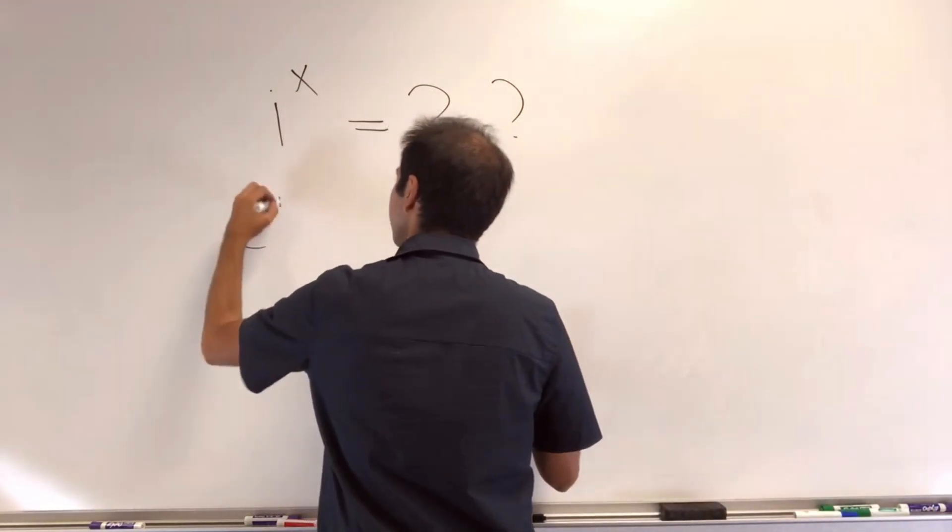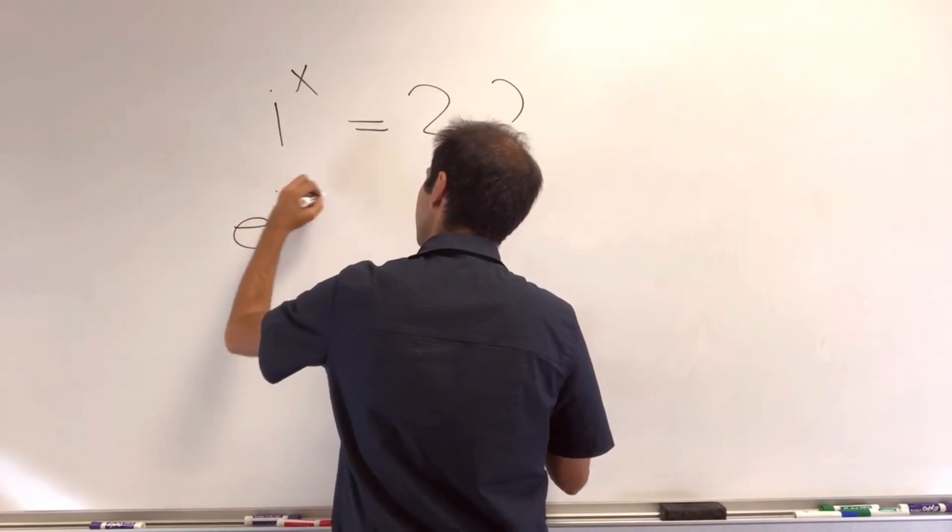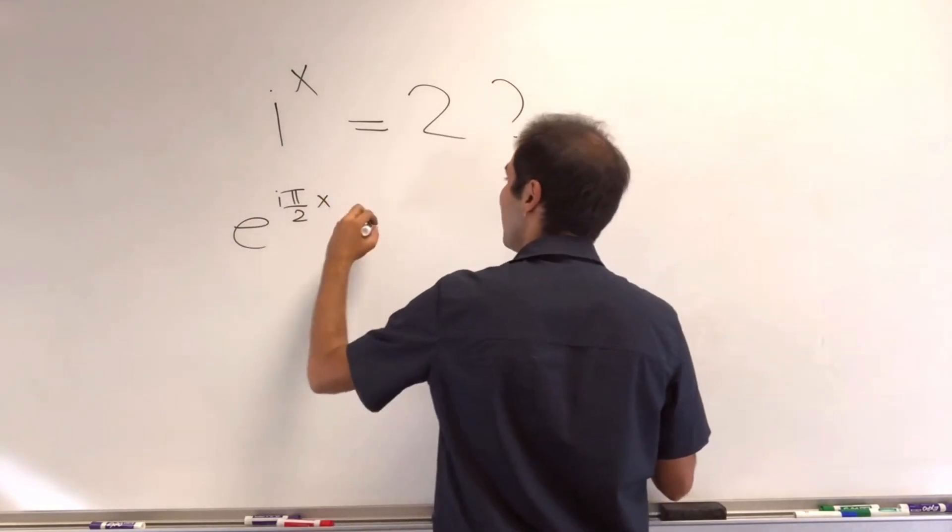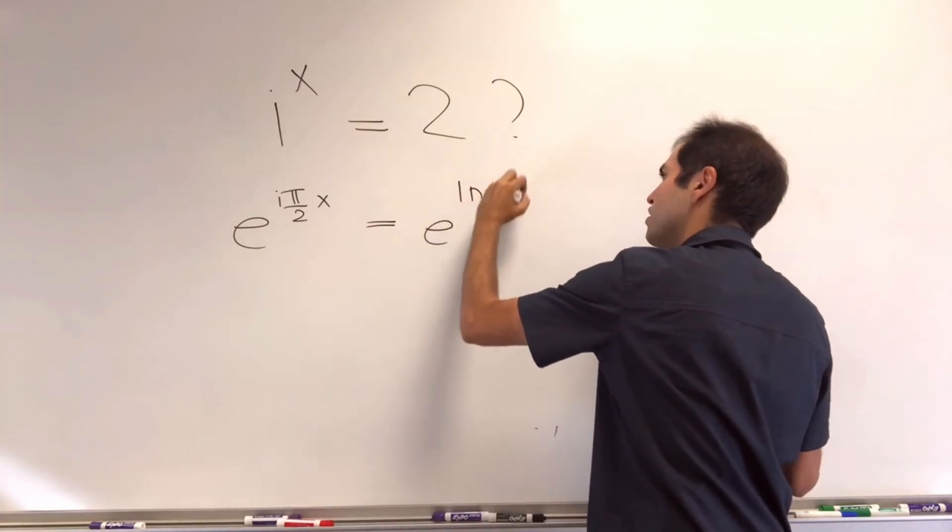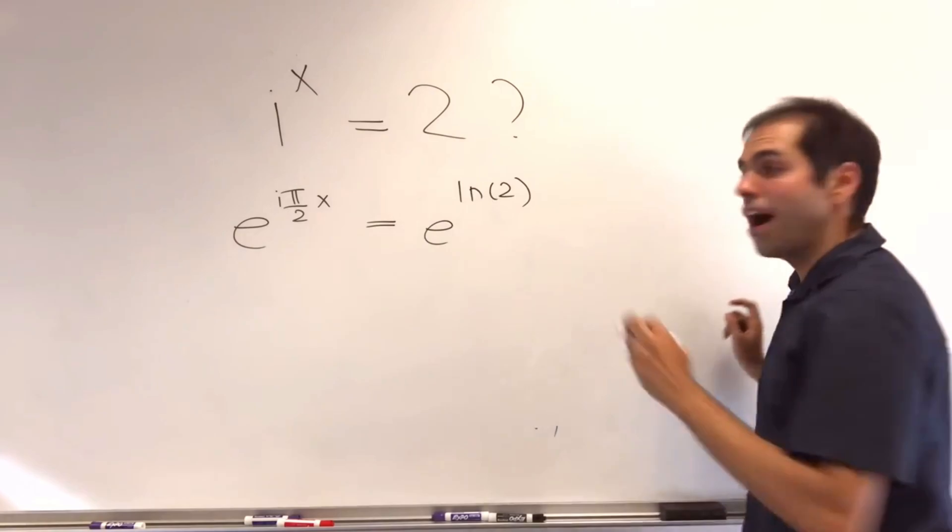Because i is e to i pi over 2, so e to i pi over 2x equals 2, which again is e of ln of 2, plus 2 pi mi if you wish.